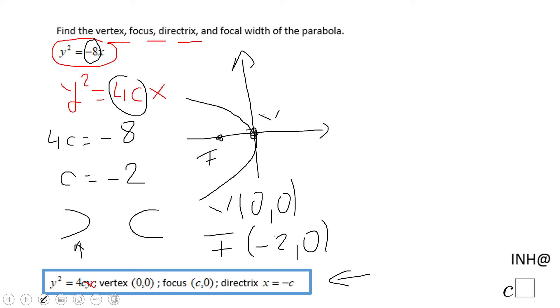And the directrix. So again, this is the vertex. And the directrix will be this vertical line, 2 units away from the vertex. So it's going to be x equals 2.